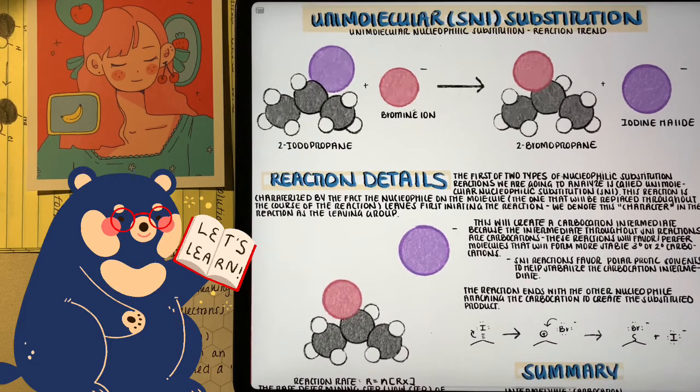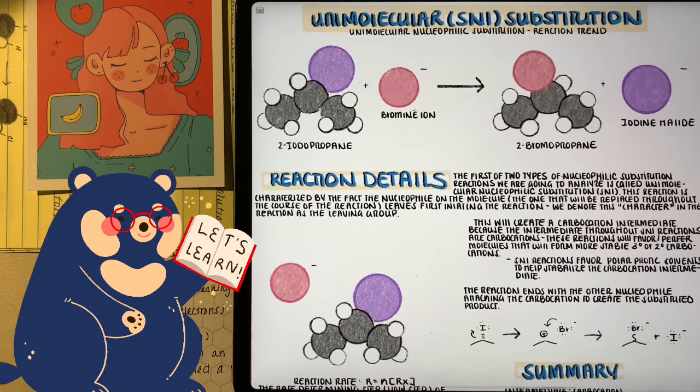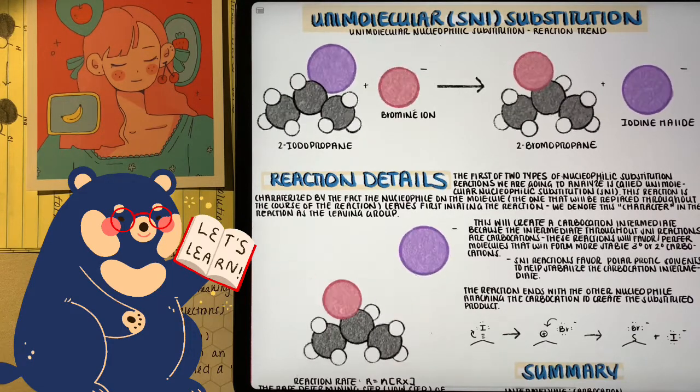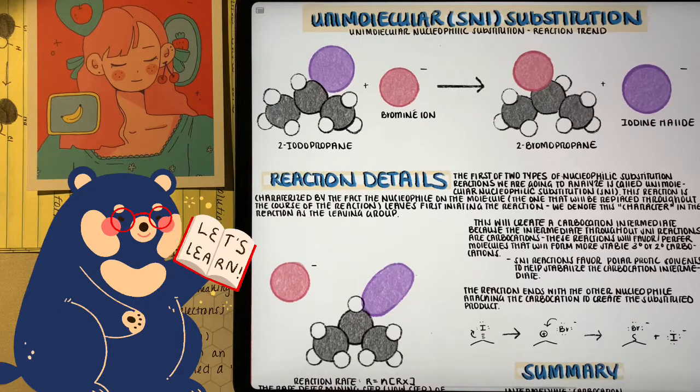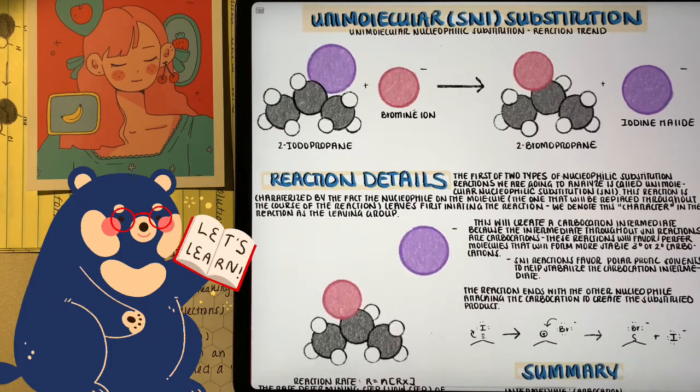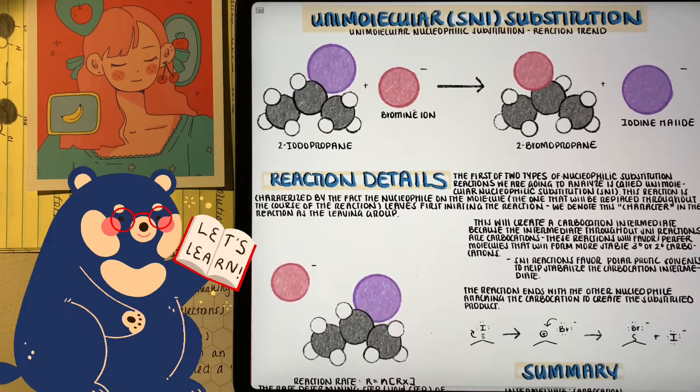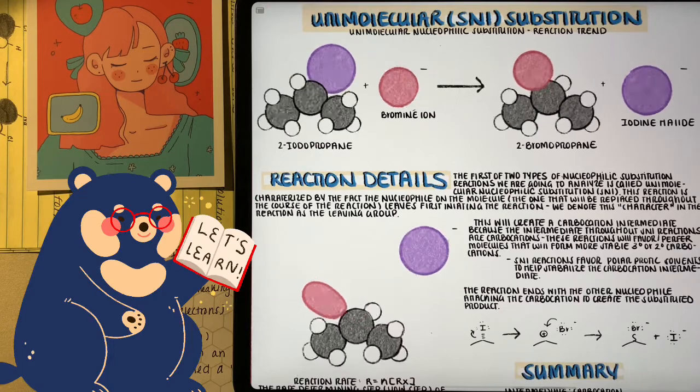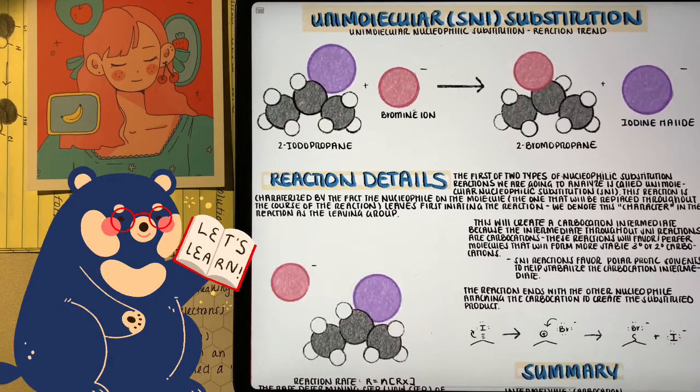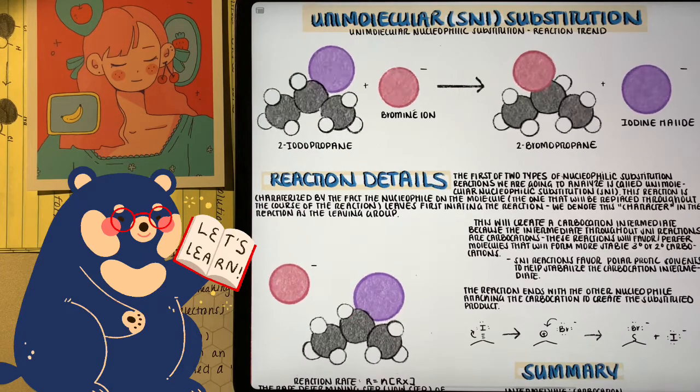The very first reaction that we're going to look at is SN1, unimolecular substitution. This pathway is really governed by the fact that the leaving group leaves first. So in this case, the iodine is going to leave first, and it's usually because of interactions with the solvent. We're going to talk about solvent and other factors that go into these reactions later on. Through the iodine leaving, it's going to take that shared electron with it, and this is going to create a carbocation.